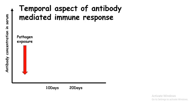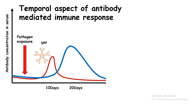Now let's talk about the kinetics of humoral immune response. When we are exposed to a pathogen, antibody production does not happen immediately — it takes approximately 10 days for antibody generation to start. Initially the antibodies are of the IgM isotype, and later IgG antibodies are produced.